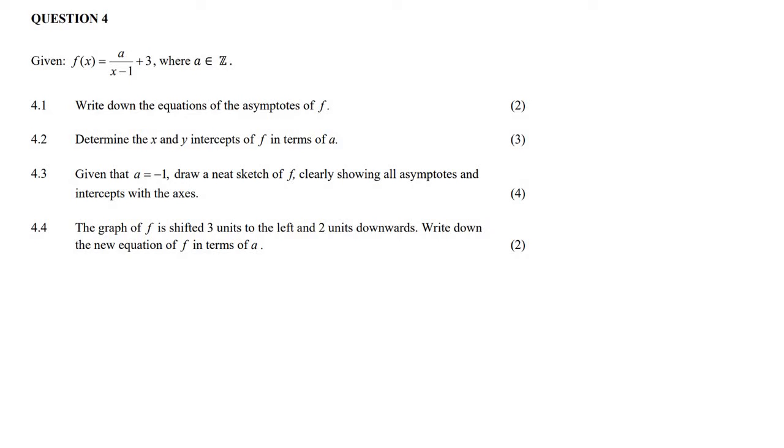Given f of x equals a over x minus 1 plus 3, so this is a hyperbola. Write down the equations of the asymptotes. Let's talk about the basics quickly. We know that a hyperbola has a vertical asymptote and it has a horizontal asymptote.